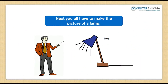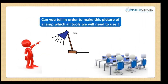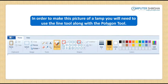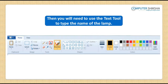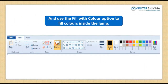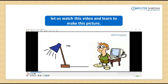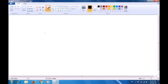The next picture is of a lamp. Can you tell which tools we need to use in order to make this picture of a lamp? In order to make this picture, you will need to use the line tool along with the polygon tool, then you will need to use the text tool to type the name of the lamp, and use the fill-with-color option to fill colors inside the lamp. If you cannot make this, then you need to take help by watching the video.